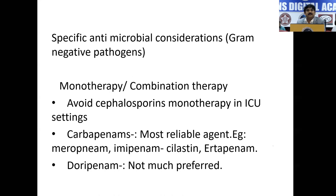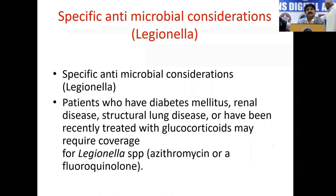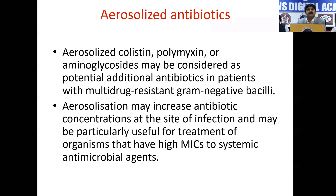For specific antimicrobial considerations for gram-negative organisms, think about whether to treat with monotherapy or combination therapy. Try to avoid cephalosporins as monotherapy in ICU settings. Other drugs like carbapenems are the most reliable agents — Meropenem, Imipenem, and Cilastatin can be considered. For Legionella, always try to treat with Azithromycin or Fluoroquinolones. Inhaled antibiotics like Colistin, Polymyxin, and Aminoglycosides can be considered as potential antibiotics in patients with multidrug-resistant gram-negative infections. Aerosolization may increase antibiotic concentration at the site of infection, particularly useful for organisms with high MICs.